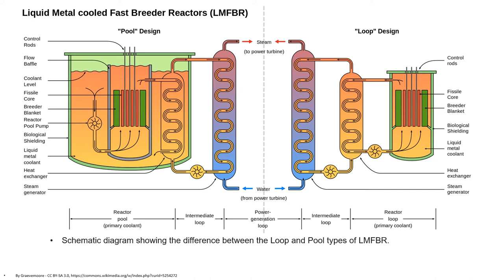Here in this schematic diagram is represented the difference between loop and pool types of liquid metal fast breeder reactors. In pool type design, the primary heat exchangers and pumps are immersed in the reactor tank. In loop type design, the primary coolant is circulated through the primary heat exchangers outside the reactor tank but inside the biological shield, due to the radioactive sodium-24 in the primary coolant.